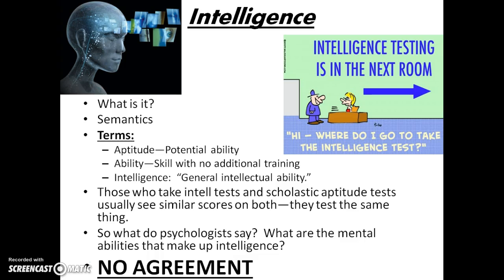Let's start with intelligence — what is it? That's a question that's not easy to define. Semantics may be as important here as in any area of psychology. Some of the important words include aptitude, which is of course potential ability, similar to a predisposition in a disease. Ability itself is skill with no additional training.